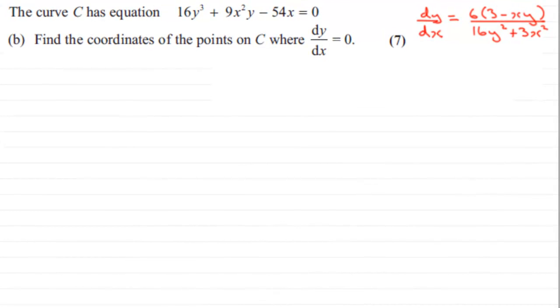Hi. Now in the previous part of the question, part A, we were given the curve C with this equation here and asked to find dy/dx, which we did. dy/dx equals 6 times (3 minus xy) all over 16y² plus 3x². Now in part B, we've got to find the coordinates of the points on C where dy/dx equals zero.